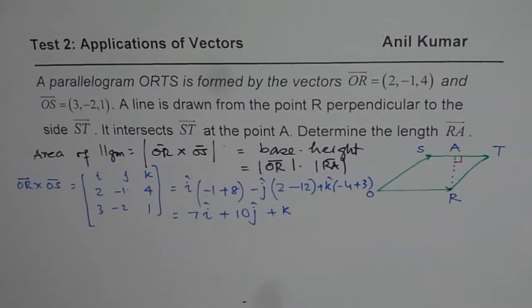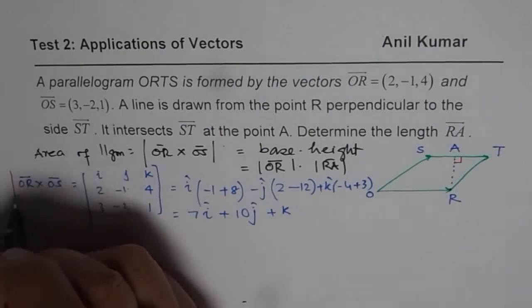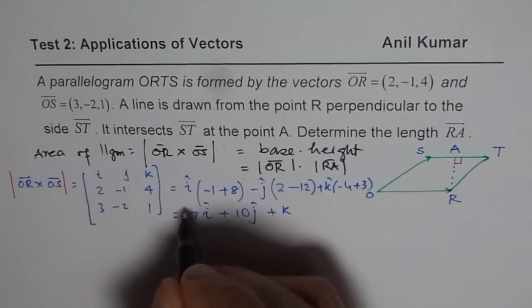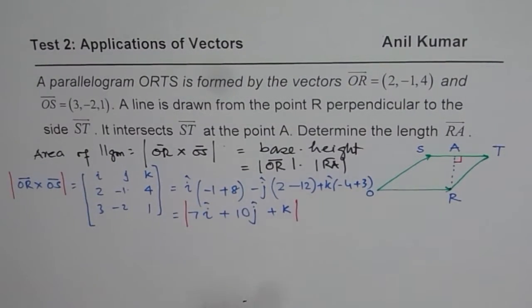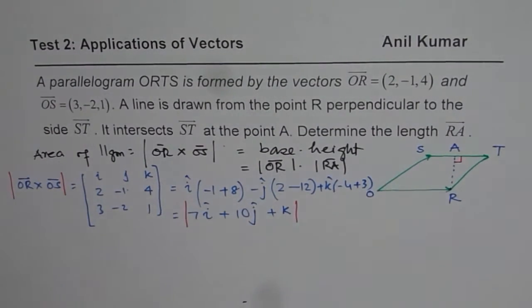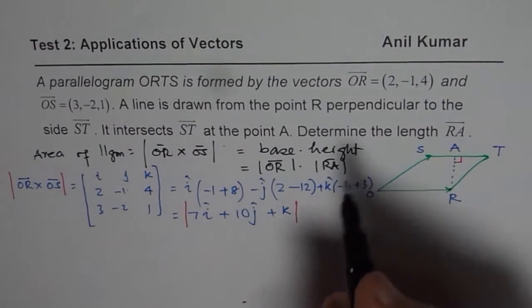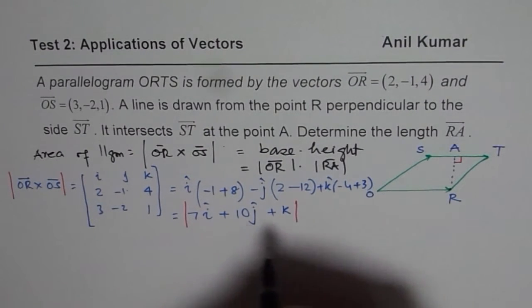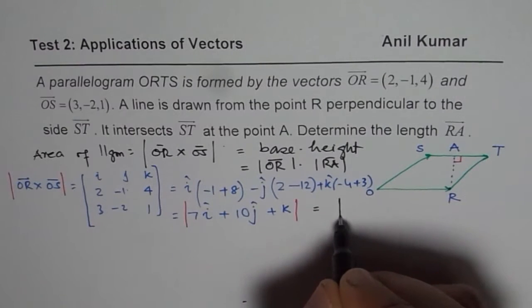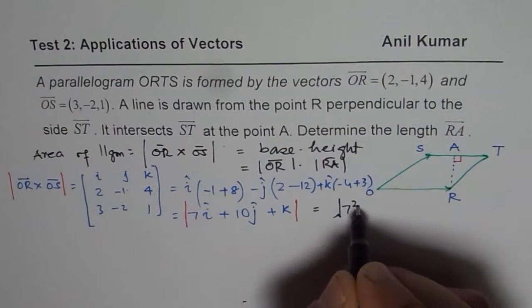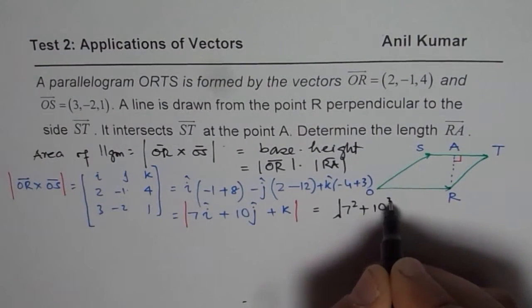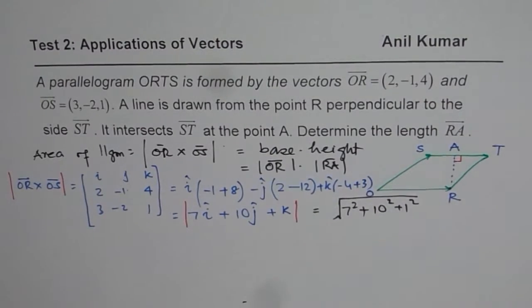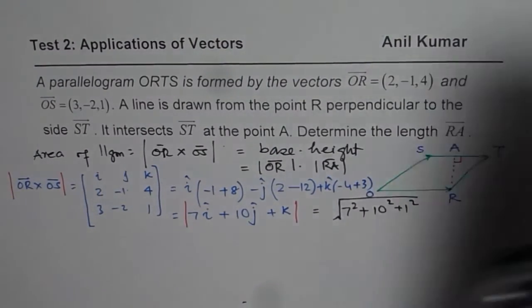We are interested in finding this magnitude. So now let us find the magnitude of this. So magnitude of this will be equal to, let me continue here. So magnitude of this will be equal to square root of 7 square plus 10 square plus 1 square. So we can use calculator to find this answer.